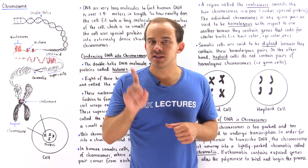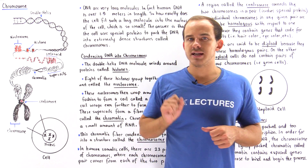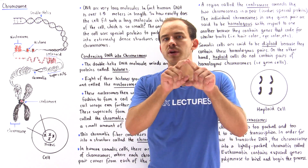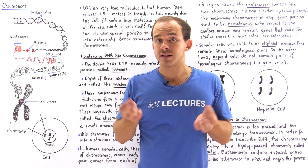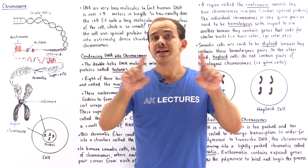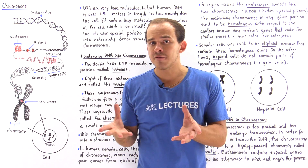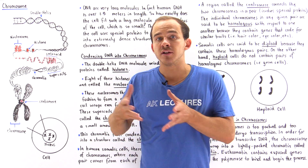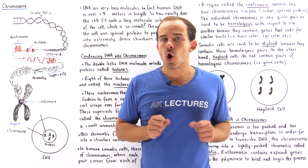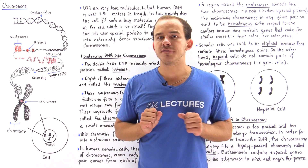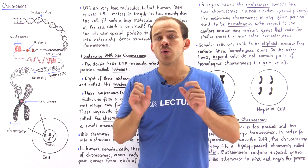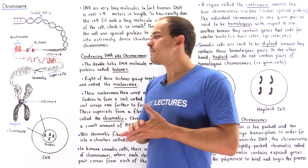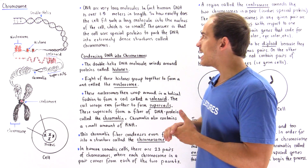If we take a single double helix DNA molecule found in the human body and extend it in a linear fashion, on average our DNA molecule will have a length slightly over 1.5 meters, which is equivalent to being over 5 feet in length.